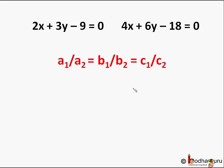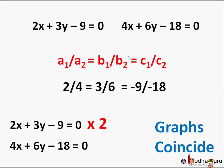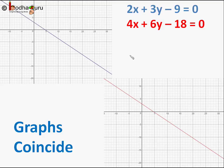But what if a1/a2 = b1/b2 = c1/c2? Like in this example: 2x + 3y - 9 = 0 and 4x + 6y - 18 = 0. Here a1/a2 = 2/4 = 1/2, b1/b2 = 3/6 = 1/2, and c1/c2 = (-9)/(-18) = 1/2. Both equations are actually the same — if we multiply the first equation by 2 we get the second one. So their graphs will coincide; both lines are on top of each other. One may be longer, one may be shorter, but they are together. So all the common points of the two graphs will be the common solution of this pair of linear equations.